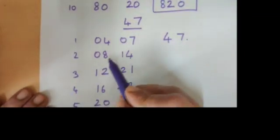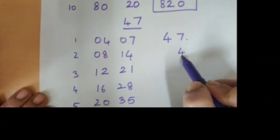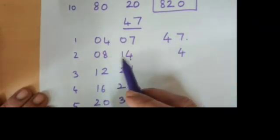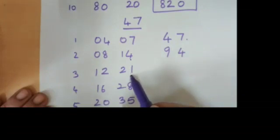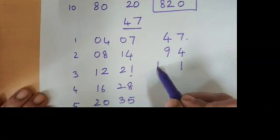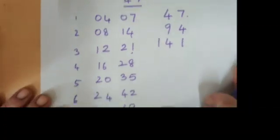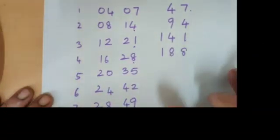And all that you need to do, remember, whatever is in the last digit here or the last column here, write as is. And here you will have 8 plus 1 is 9, 94. Similarly last column, whatever is there, you write as is. 12 plus 2 is 14, 141. Last column as is, 16 plus 2 is 18, 188.